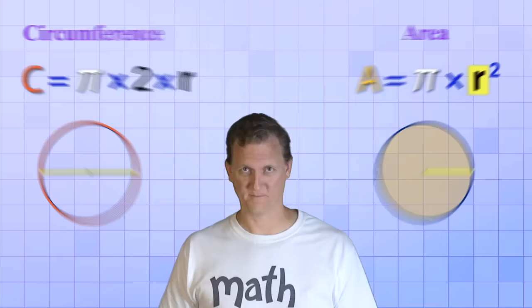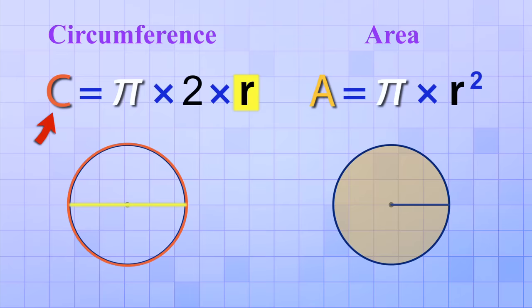Ha! Now you see why it's so easy to get confused. To find the circumference, you take the radius and double it, then you multiply by Pi to get the final answer. But for area, you don't double the radius, you square it. And that's a very important difference.